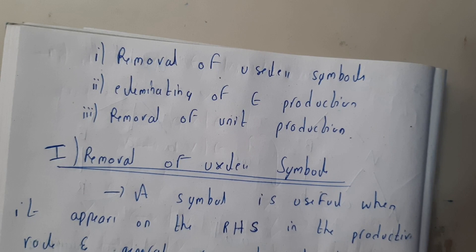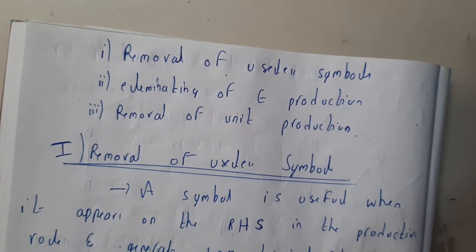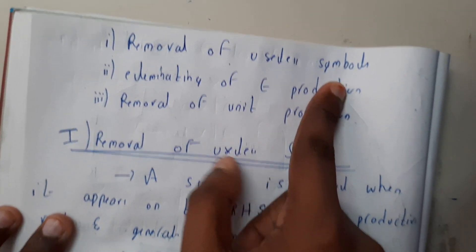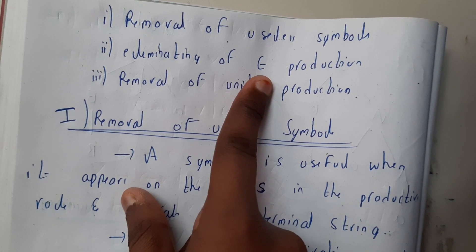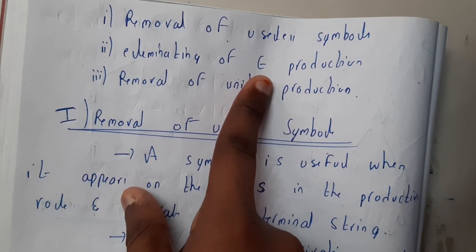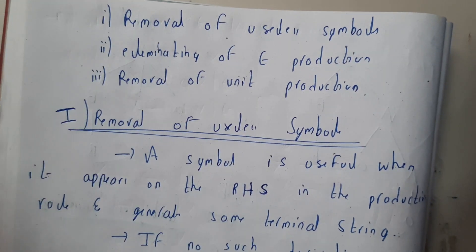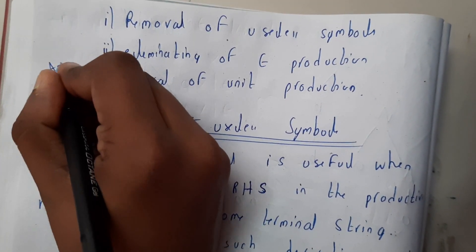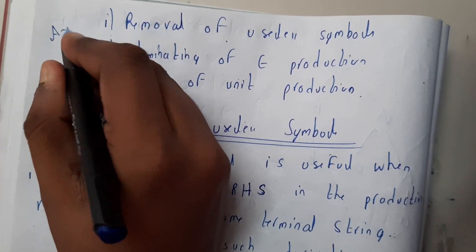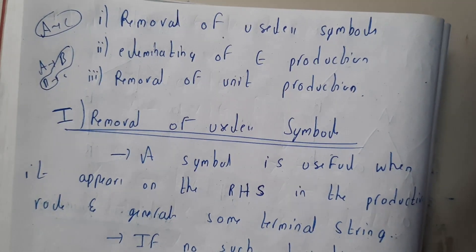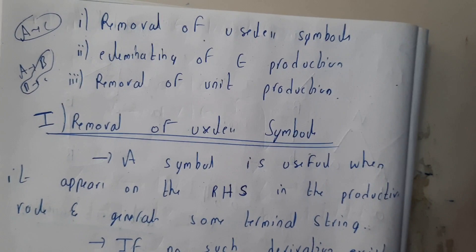if they are not of any use, why are we using them in the grammar? That's a waste. So we need to remove the useless symbols. If there are any epsilon productions, replace them with other productions and remove the epsilon. Then there is removal of unit productions — something like A tends to B and B tends to C; it can be directly A tends to C. Those are unit productions. Let us go through each one with small examples.